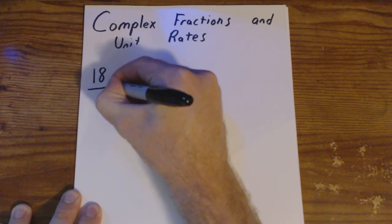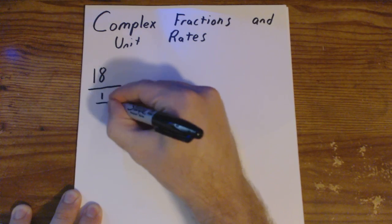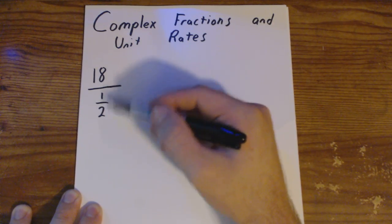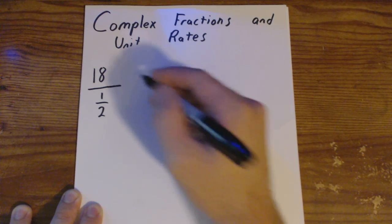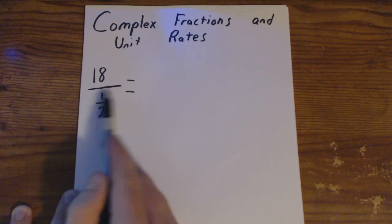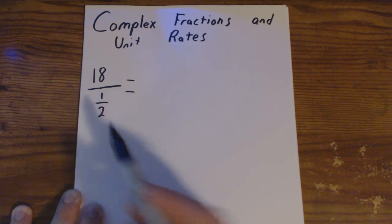They might look something like this. You have 18 on top and 1 half on bottom. So it's kind of like you're going to have two fractions. Now the way to simplify these is we just remember that this big line is essentially like dividing.